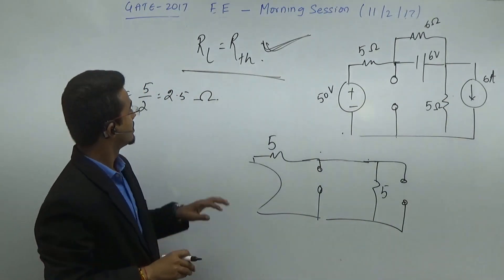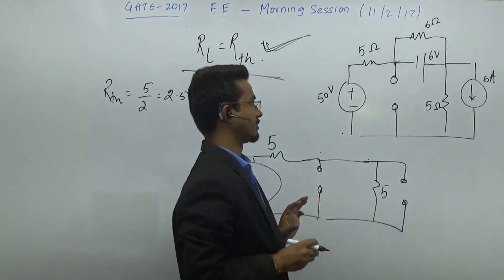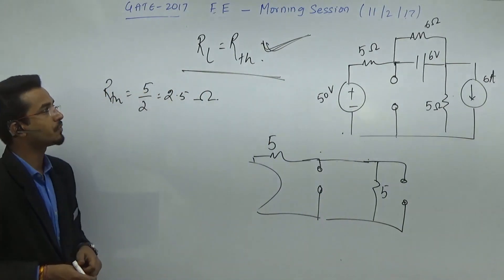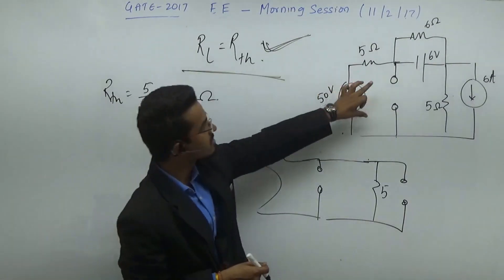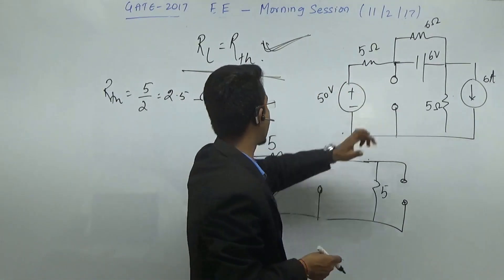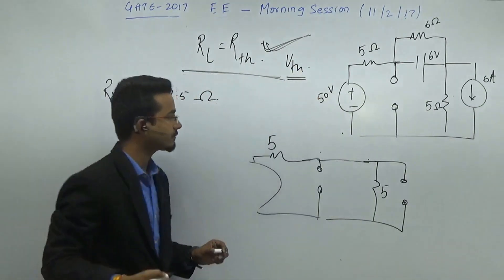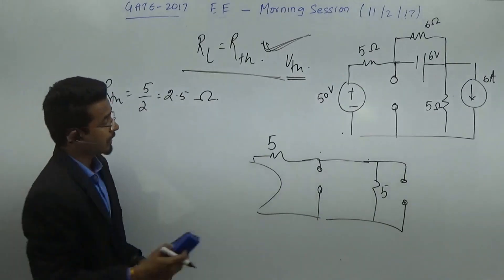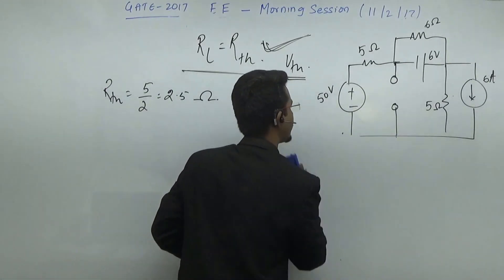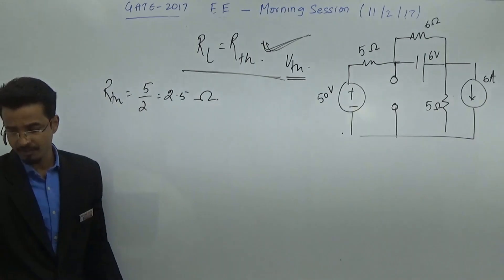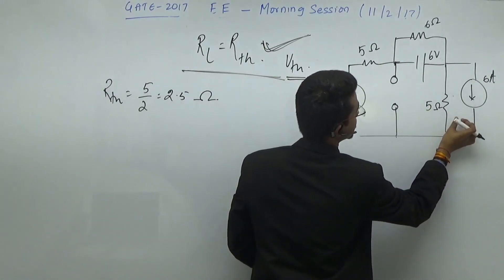This is the value of the Thevenin resistance seen from this open-circuited terminal. The second thing to calculate is what should be the value of the open-circuited voltage. We are calculating the value of VTH. We have studied the source transformation method, and here we can apply the source transformation method.